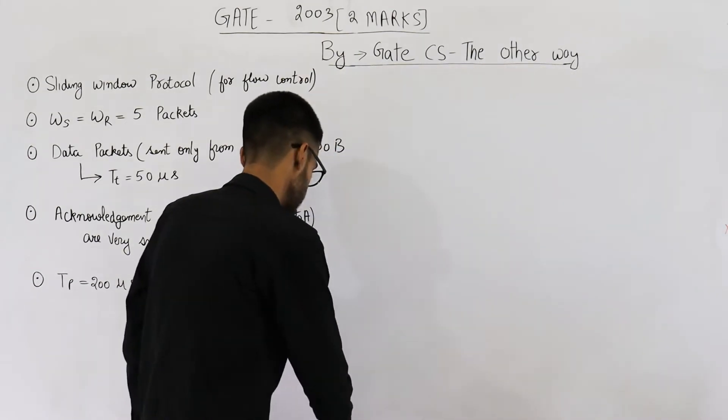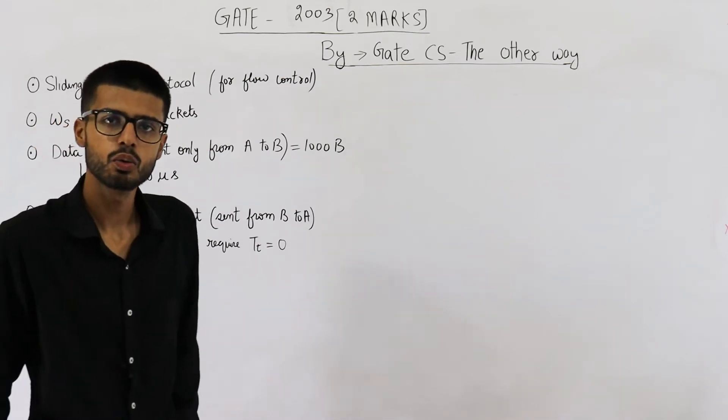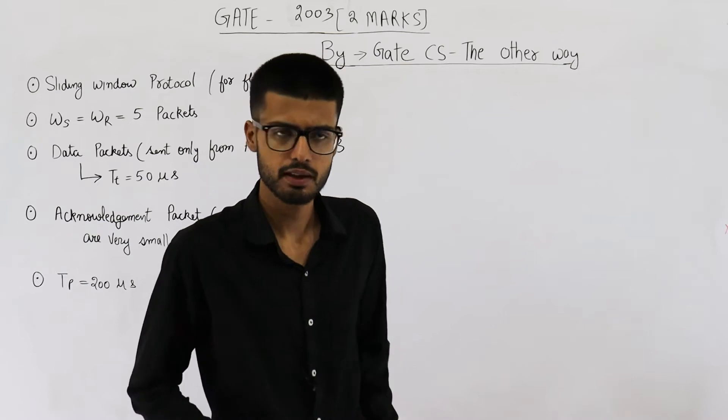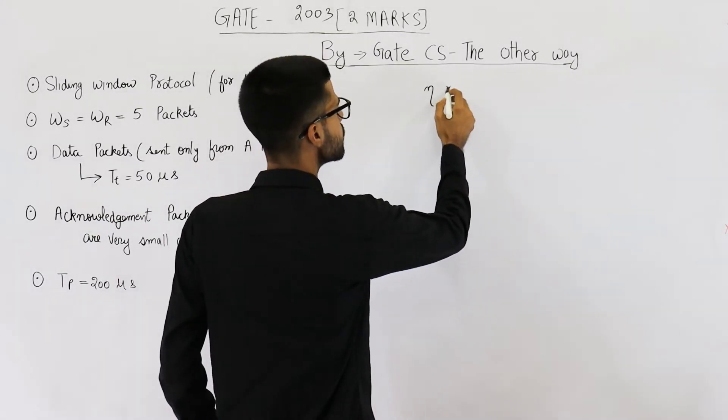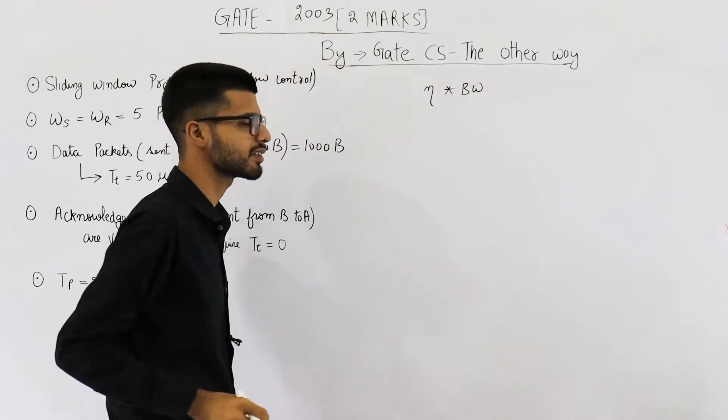So we need to determine maximum throughput. Throughput is efficiency into bandwidth. Throughput actually means how efficiently are we using the available bandwidth. For that we first need to determine the value of efficiency. So let us find what is the efficiency.